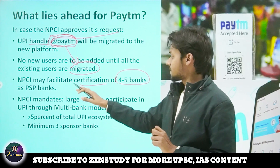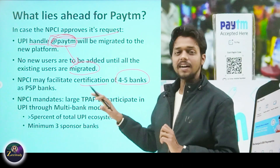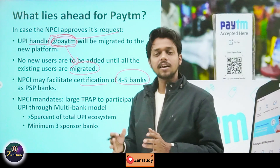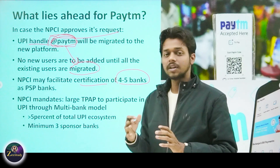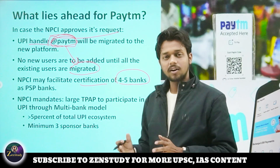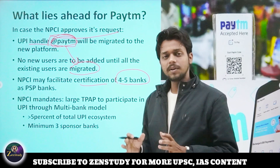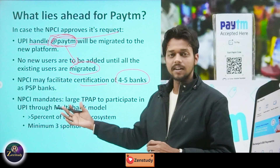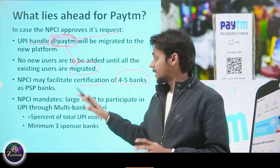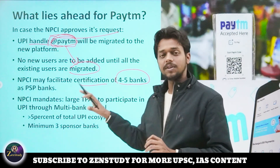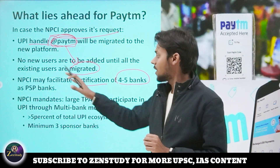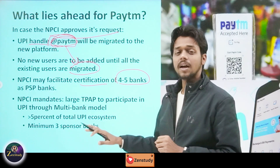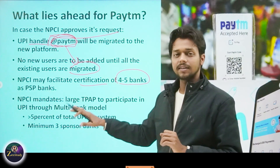After that, NPCI may facilitate the certification of 4 to 5 banks as PSP sponsor banks for Paytm. Any UPI platform needs sponsor banks. For example, Google Pay has ICICI Bank, HDFC Bank, and SBI as its sponsor banks. So if there is a new third party application, NPCI will facilitate multiple sponsor banks for it.